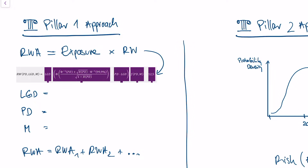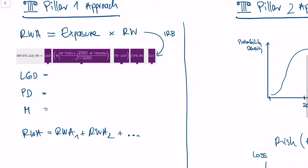Here you see the so-called IRB formula for the risk weight. The first number going into this risk weight is the so-called LGD — short for loss-given-default. This number gives you information on how secure the loan is. For example, imagine you have given a loan to a company of 100 million euros, and this company gives you their company headquarters as security, worth 80 million euros.